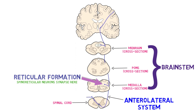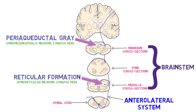Another collection of fibers, called the spinal mesencephalic tract, extends to the periaqueductal gray in the brain stem. Stimulation of the periaqueductal gray plays an important role in pain modulation, a process by which the brain can modify and potentially decrease pain signals.